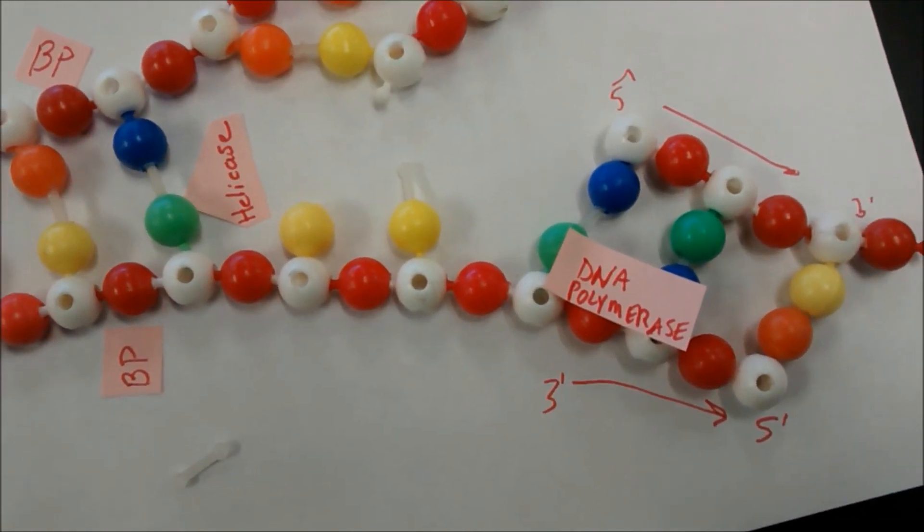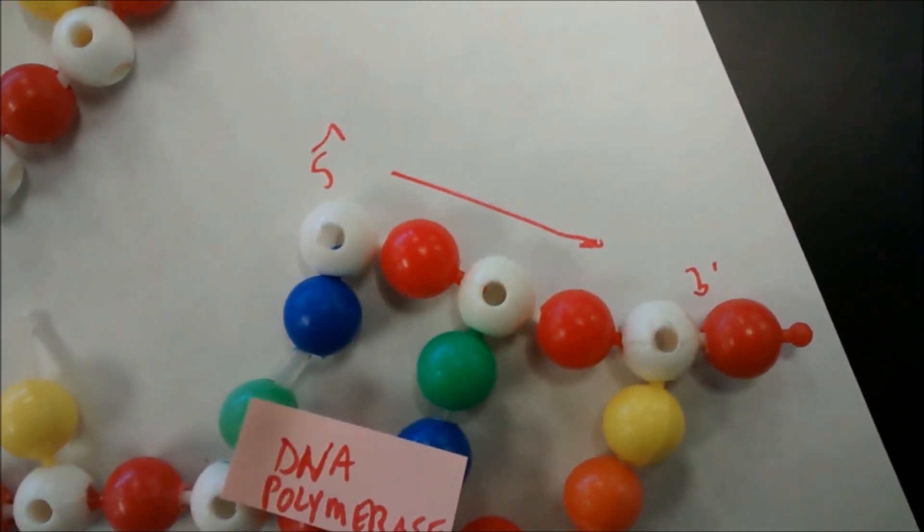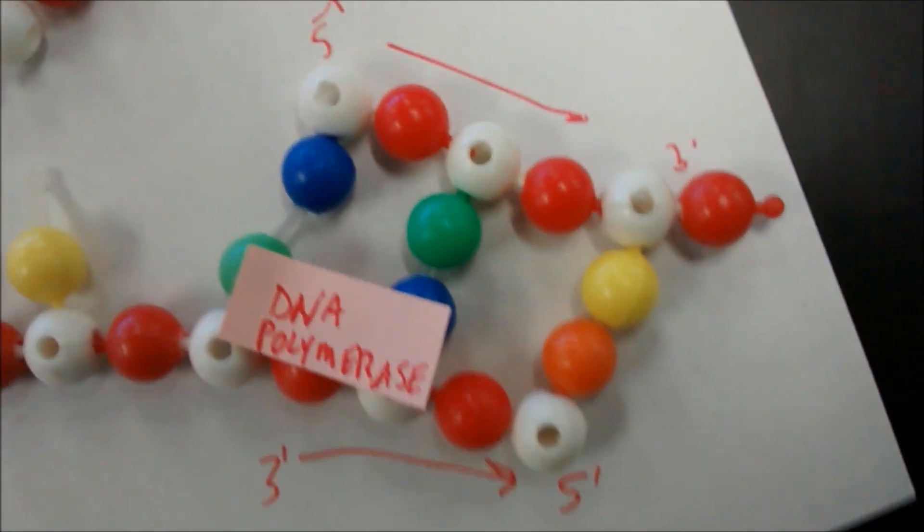So there's DNA polymerase sliding in the three prime to five prime direction, building the new daughter strand five prime to three prime. All right, so what happens when he gets to the end?